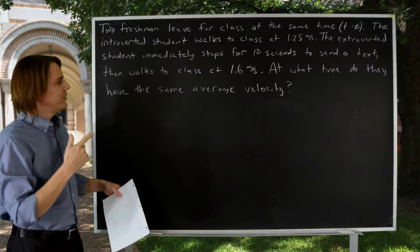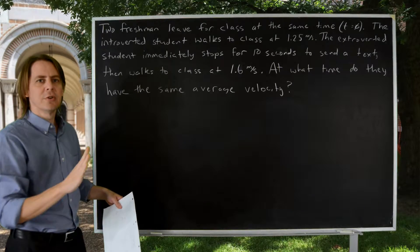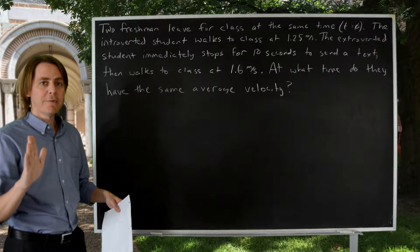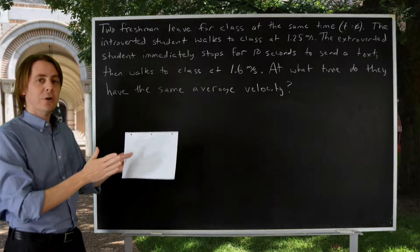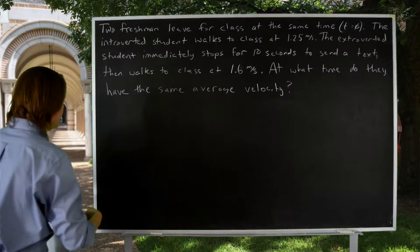So the question is, at what time do they have the same average velocity? Before we get into answering the question, the first step in a problem like this, absolutely, is to make a graph where you plot the motion of both objects on the same plot. That is critical to solving this kind of problem.